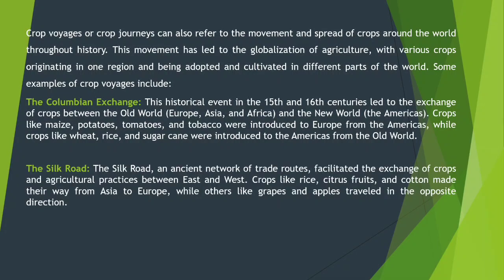The Silk Road, an ancient network of trade routes, facilitated the exchange of crops and agriculture practices between East and West. Crops like rice, citrus fruits, and cotton made their way from Asia to Europe, while others like grapes and apples traveled in the opposite direction.